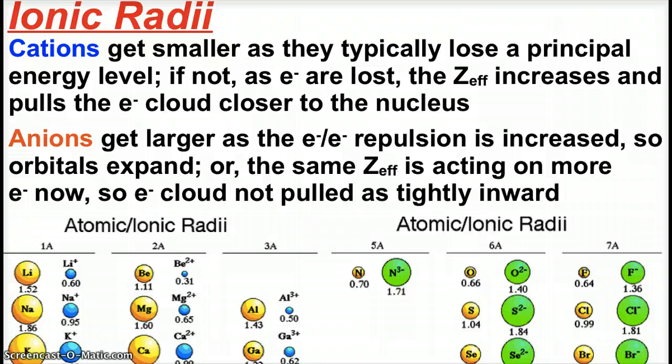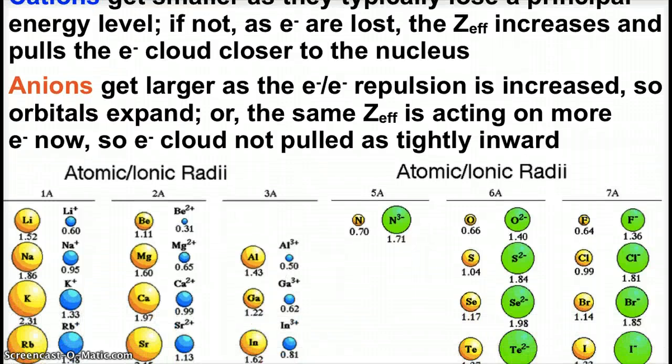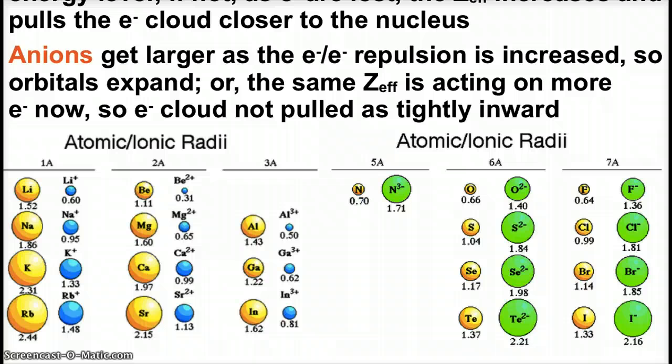Anions get larger due to electron-electron repulsions being increased. Orbitals expand, or again we can talk about Zeff. You're putting electrons into the atom, so now there's less protons than there are electrons, and the electron cloud is not pulled in as tightly anymore.